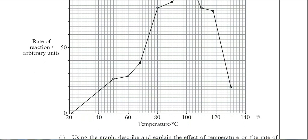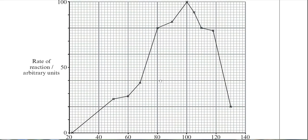The x-axis is temperature, and the y-axis is rate of reaction in arbitrary units. Looking at that graph, it should look similar to a graph your teacher has drawn in class showing the effect of temperature on enzyme activity — you always have a peak on that graph, and that peak generally relates to the optimum temperature.